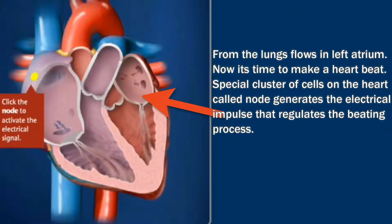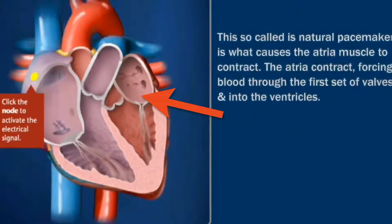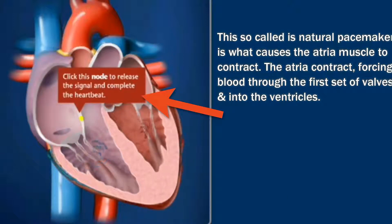Now it's time to make the heartbeat. A special cluster of cells on the heart called a node generates the electrical impulse that regulates the beating process. This so-called natural pacemaker is what causes the atrium muscles to contract. Let's click the node to activate the electrical signal — signaling the ventricles. The atria contract, forcing blood through the first set of valves and into the ventricles.